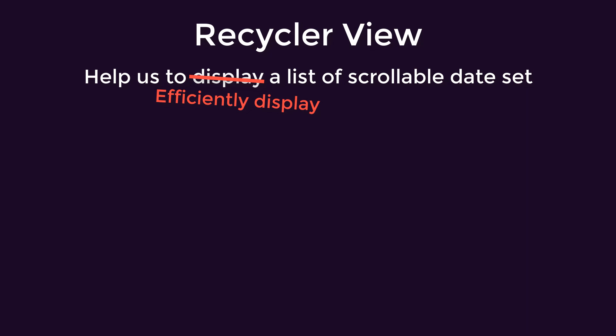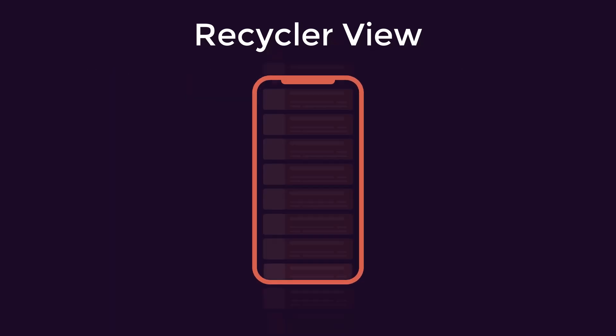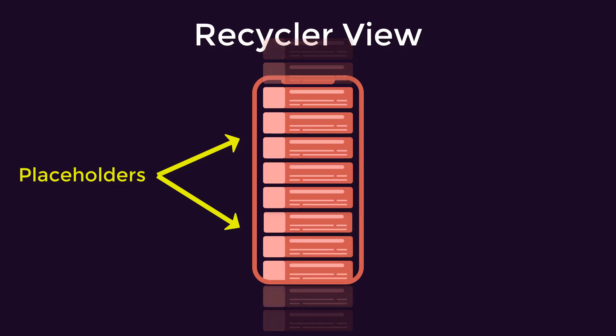What makes RecyclerView more efficient is — as the name suggests — it only inflates the necessary items within the list that are visible to the user or about to be visible to the user. It uses a finite number of placeholders to show items, and as the user scrolls, it recycles those placeholders to show new items from the list.